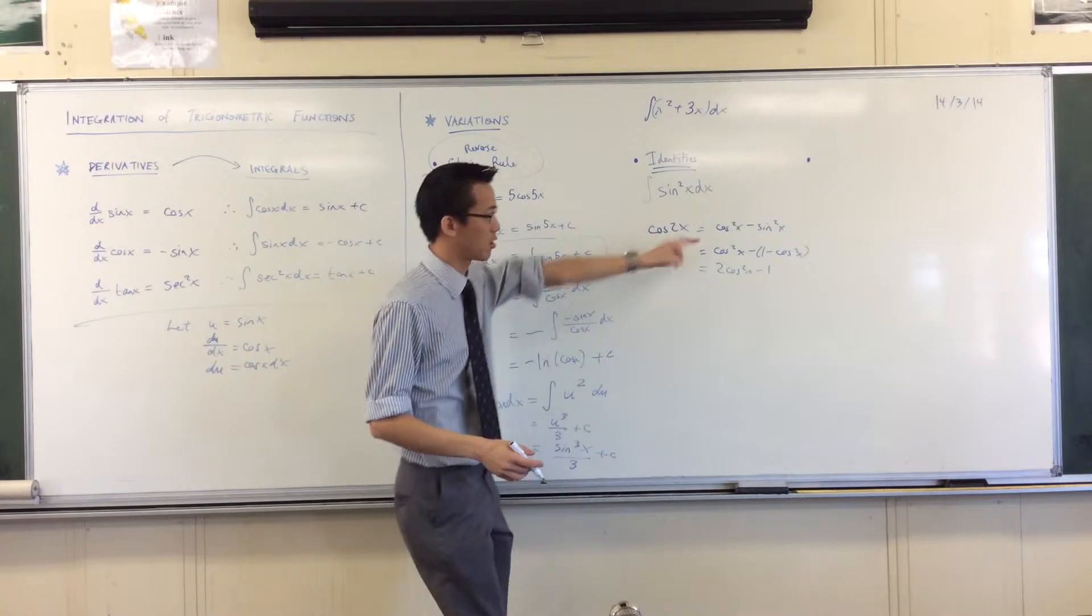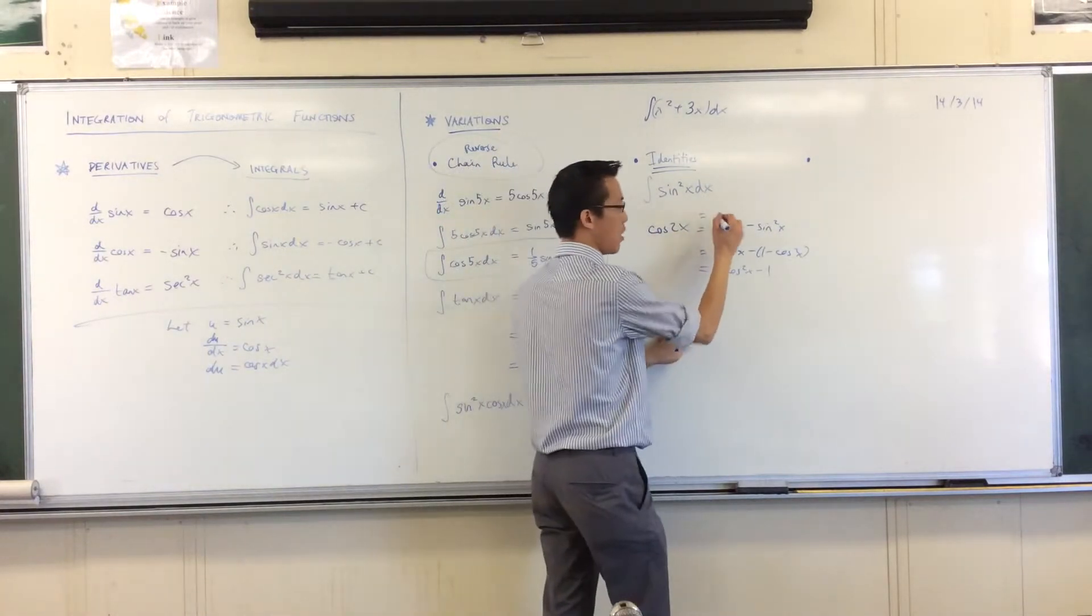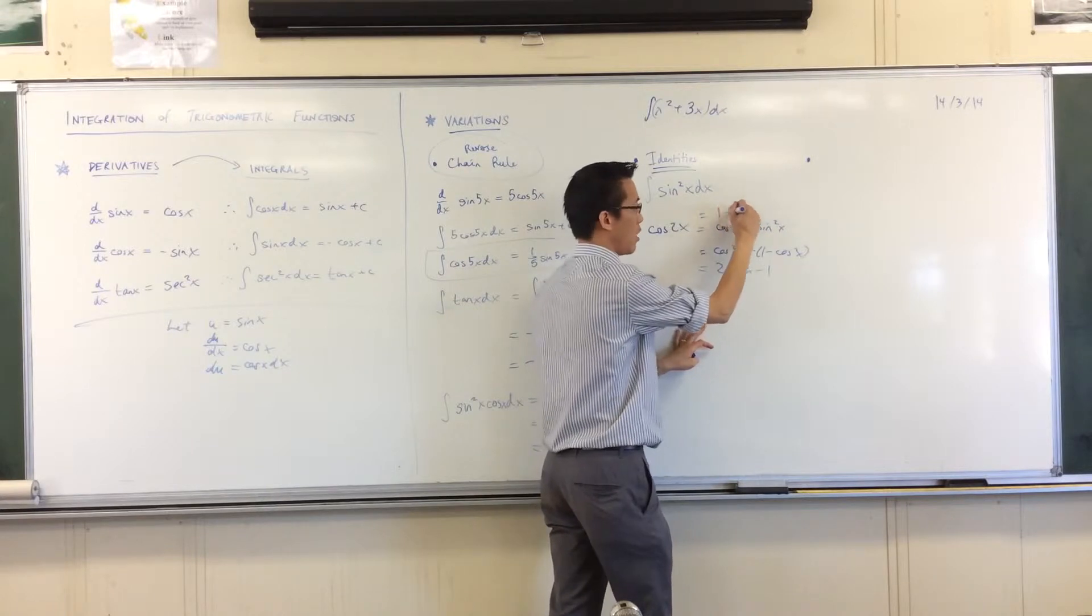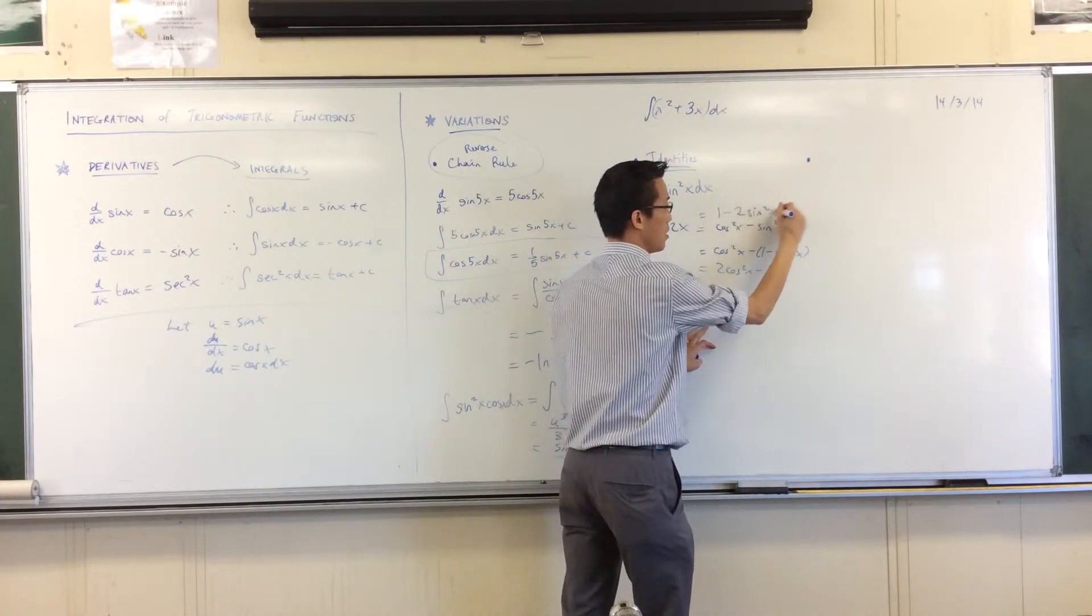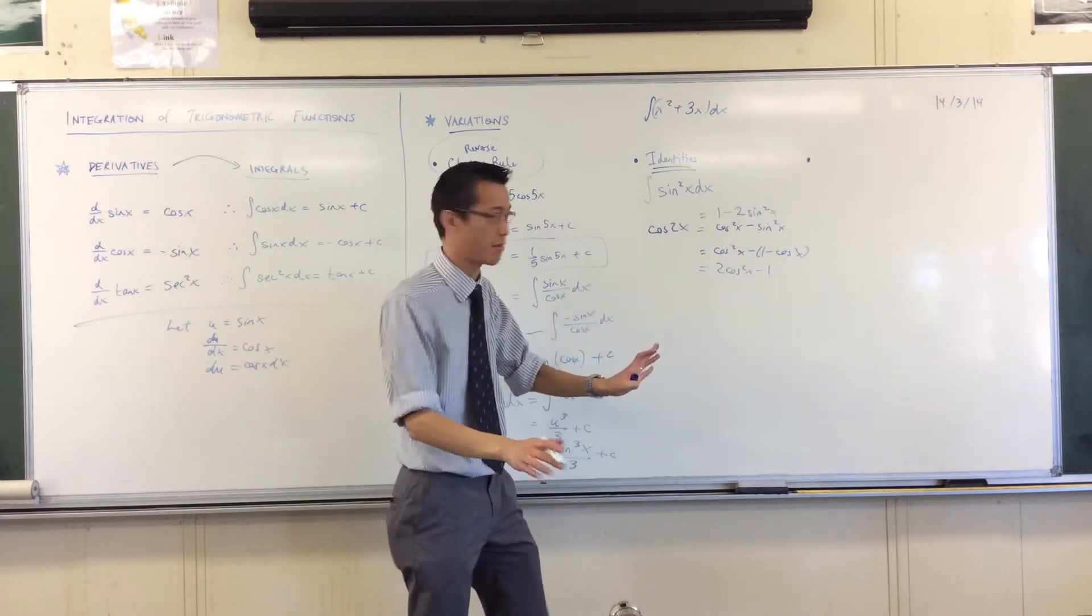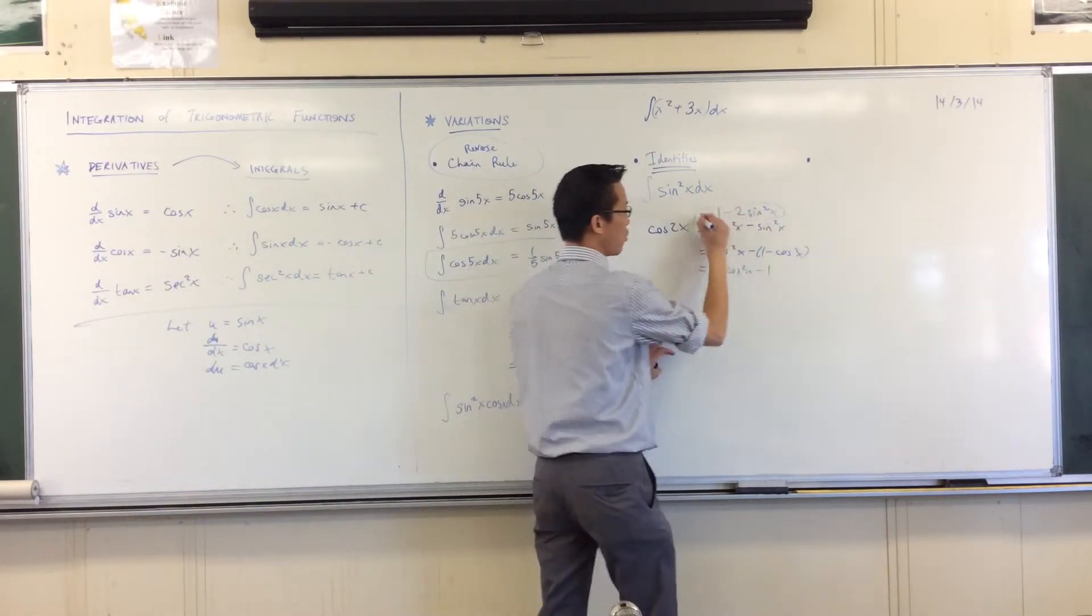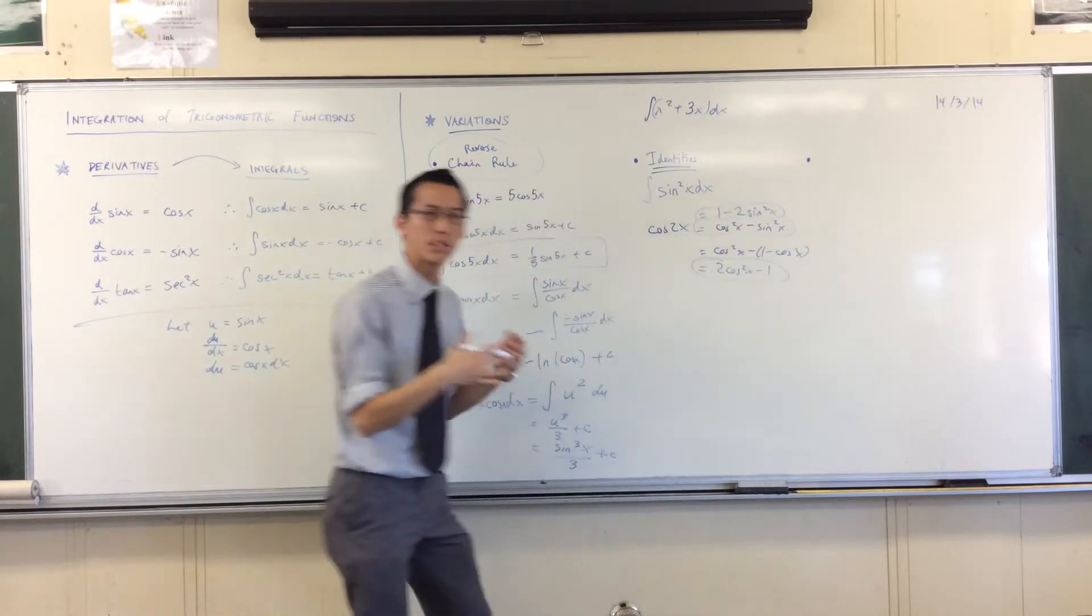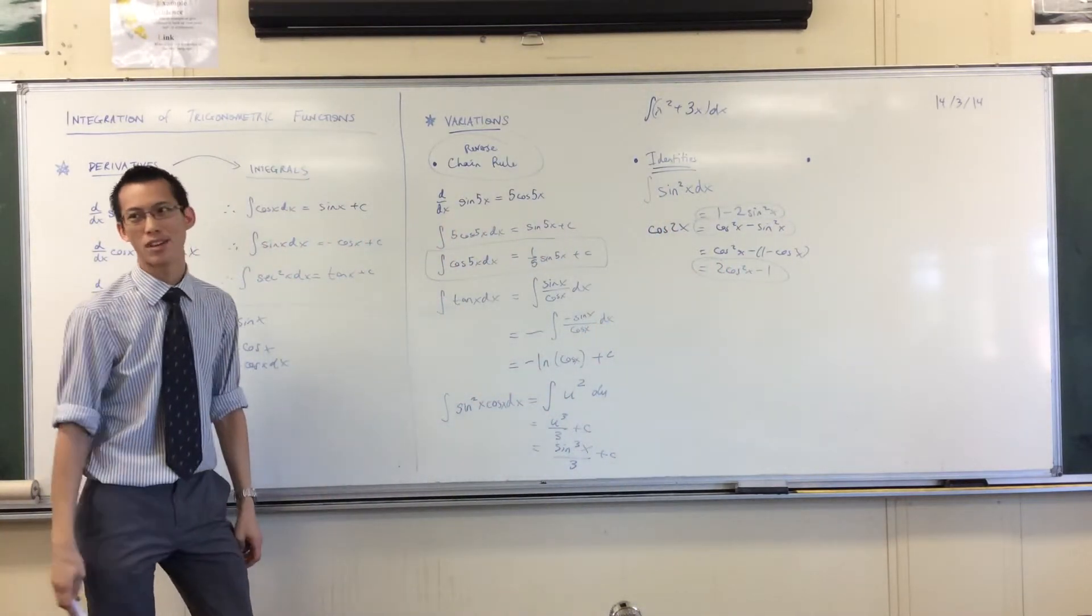Just as equally I could change the cos into a 1 minus sine squared which would leave me with 1 minus 2 sine squared. So this is kind of handy. Cos 2x is unique in this way. Sine 2x doesn't do it. I can put it in this form or this form or this form, all of which are useful in different kinds of scenarios. So which one am I after?